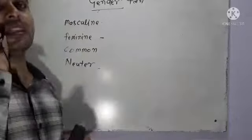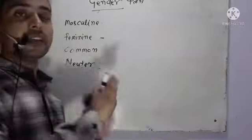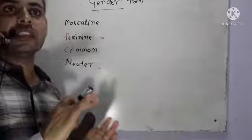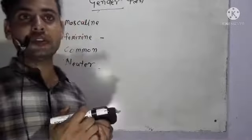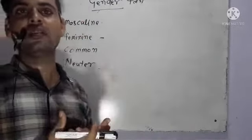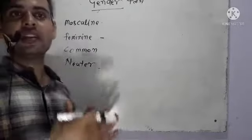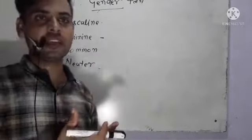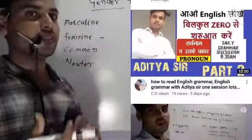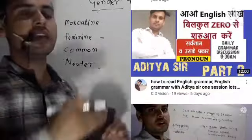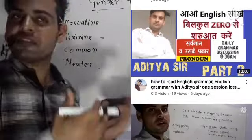We know that there are four types of gender: masculine gender, feminine gender, common gender, and neutral gender. We have to relate which gender applies to which things. In the coming sessions, we will clear this differentiation.